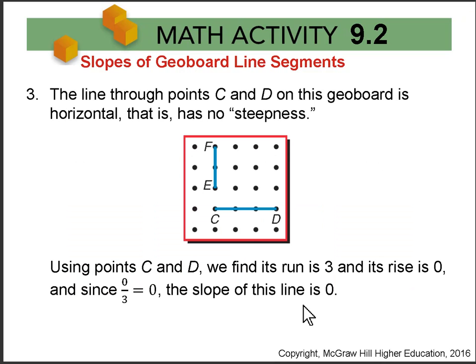In Part 3, we have two line segments, one horizontal and one vertical. The horizontal line segment CD has a run of 3 and a rise of 0. It doesn't go up at all. So the slope is 0, that's the rise over the run 3, which is 0. So the slope of this line is 0.